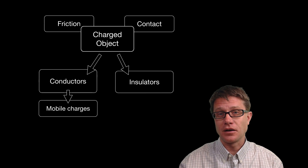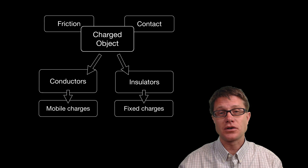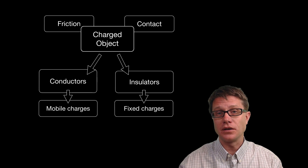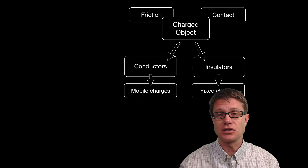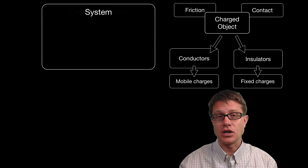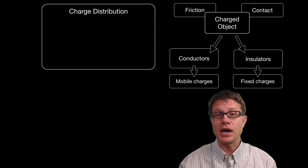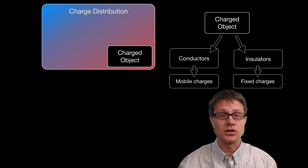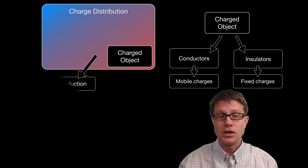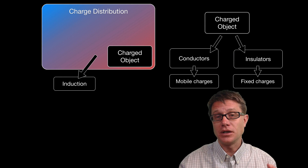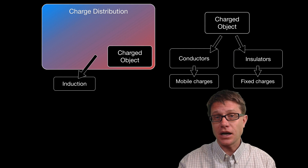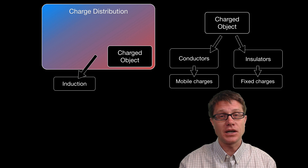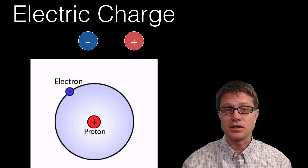If it is an insulator, all of those electrons are fixed. We can add charges to one part of it and it does not mean the rest of it has to stay charged. But if we take a charged object and add it to a system we are going to change the distribution of charges within that system. Induction means we move it next to another object without physically touching it; conduction means we physically touch it.